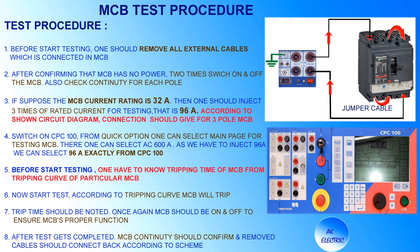Switch on the CPC100. From the quick option, select the main page for testing the MCB — you can select up to 800 ampere. As we have to inject only 96 ampere, select exactly 96 ampere from the CPC100. Before starting the test, you have to know the tripping time of the MCB from its tripping curve. Now start the test; according to the tripping curve the MCB will trip. Note the trip time, then switch MCB on and off once more to ensure it is functioning properly.